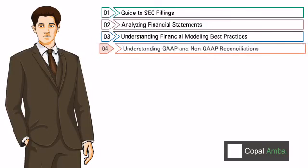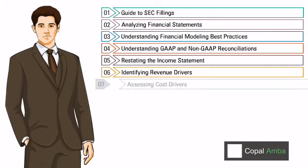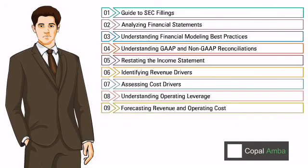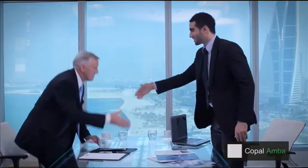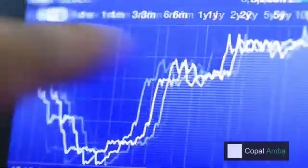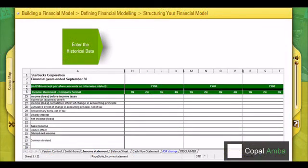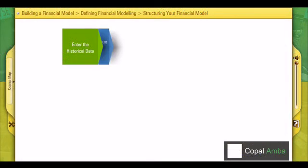The Financial Modeling Online Training Module adopts Copalamba's 13-step proprietary process to build a detailed model. It uses practical examples to explain how to identify revenue and cost drivers, forecast financial statements, and debug and balance a complex model through a series of simple steps.